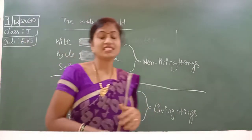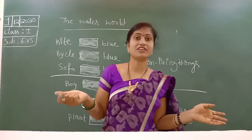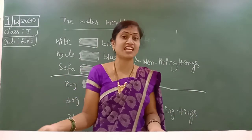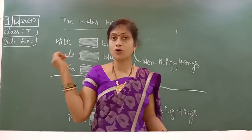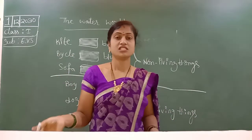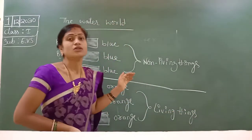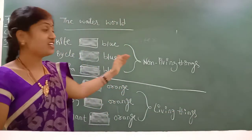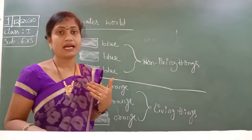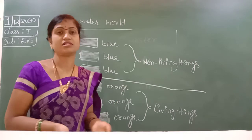Non-living things: kite, bicycle, sofa, chair — these all are non-living things. There are many non-living things — like fan, table, chair, chalk, board, walls, books — all these things. So you have to observe the differentiation between non-living things and living things. Not only these, you have to write so many examples.